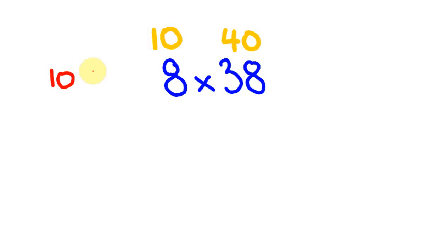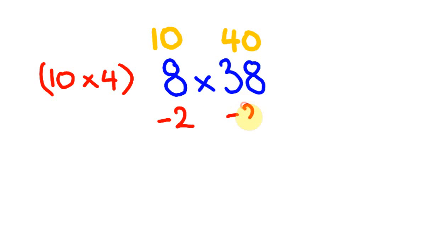So we write 10 in brackets, and 40 is the same as 10 times 4. That's the first step — getting our approximation. Now I see how far each number is from the approximate value. This 8 is 2 less than 10; this 38 is 2 less than 40. We also work out a third reference number by multiplying the 4 and the minus 2: 4 times minus 2 is minus 8.